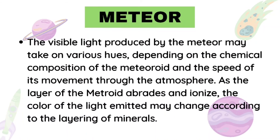The visible light produced by the meteor may take on various hues depending on the chemical composition of the meteoroid and the speed of its movement through the atmosphere. As the layer of the meteoroid abrades and ionizes, the color of the light emitted may change according to the layering of minerals.